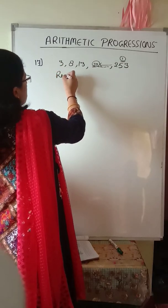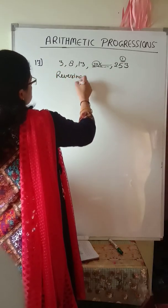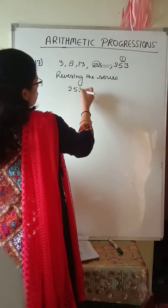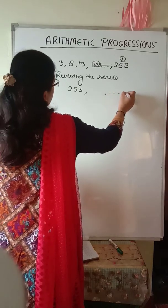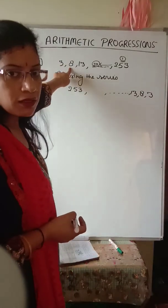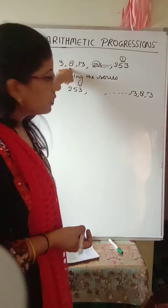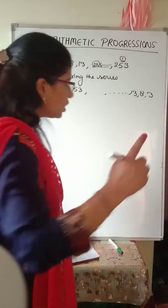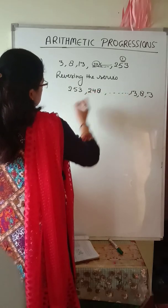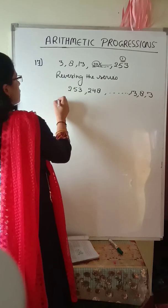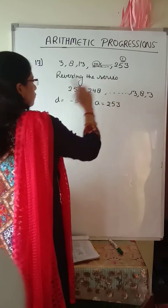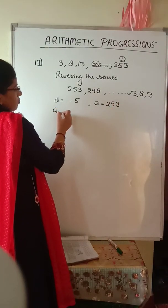Reversing the series: 253, ..., 13, 8, 3. The original common difference is plus 5, so after reversing the common difference becomes minus 5. Now the first term is 253 and D is minus 5. We have to find the 20th term A20.